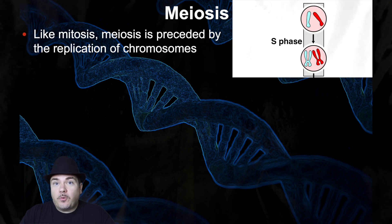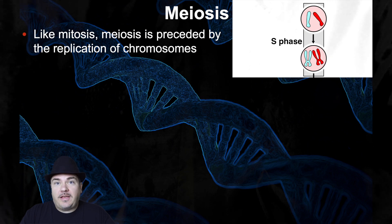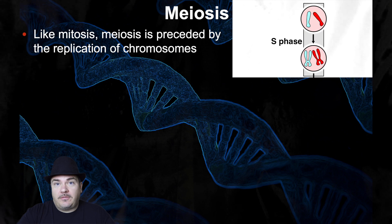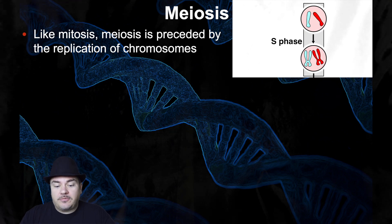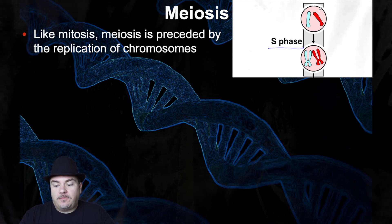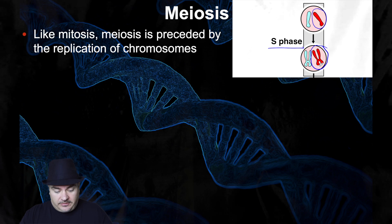Before you started mitosis, you have interphase, including S phase of interphase. During S phase, you double the amount of DNA — you go from unduplicated chromosomes to duplicated chromosomes. Well, the same is true for meiosis. Before meiosis starts, you have S phase of interphase, so you go from unduplicated chromosomes to duplicated chromosomes made up of two sister chromatids.